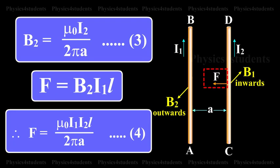Hence, force on a segment of length L of AB due to magnetic field B2 is F equals B2 I1L. Substituting equation 3, F equals mu0 I1 I2L by 2 pi A. This is equation 4.